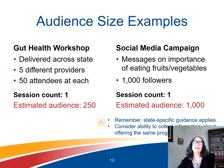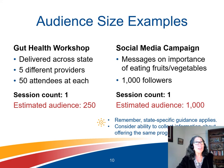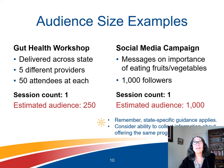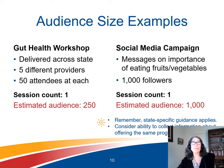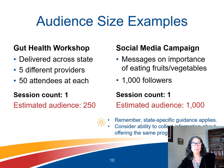Consider this example: the same gut health workshop is delivered across the state by five different providers, each estimating attendance of 50 people. The session count is one, because it is the same session provided even though offered by different providers in different areas. The estimated audience size is 250 — five providers at 50 attendees each. If the program is not statewide, an Area Agency on Aging may utilize this exact same approach.